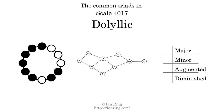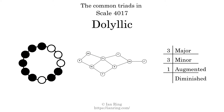Here are the common triads present in this scale. The diagram in the center is a graph of parsimonious voice leading between triads. There are 3 major triads, 3 minor triads, 1 augmented triad, and 2 diminished triads.